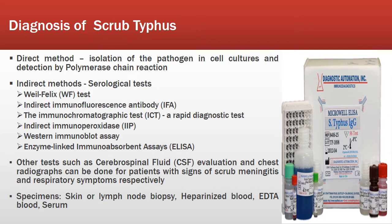For diagnosis of scrub typhus, there are different methods. The direct method involves isolating the pathogen in cell cultures and detection by PCR (polymerase chain reaction). Indirect methods are mainly serological tests, such as the Weil-Felix test, indirect immunofluorescent antibody, immunochromatographic test, indirect immunoperoxidase test, Western immunoblot assay, and enzyme-linked immunosorbent assay (ELISA). Cerebrospinal fluid evaluation and chest radiographs can also be done for patients with signs of scrub meningitis and respiratory symptoms respectively. Specimens used for diagnosis include skin or lymph node biopsy, heparinized blood, EDTA blood, and serum.